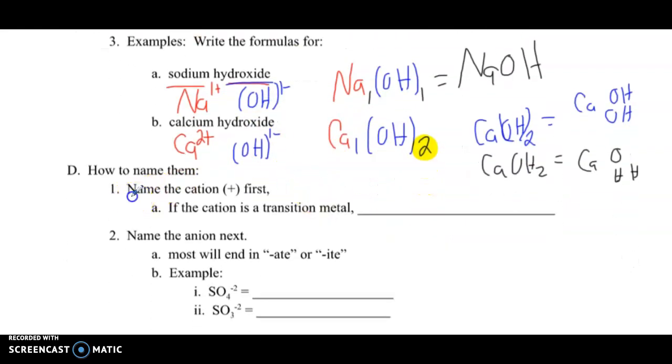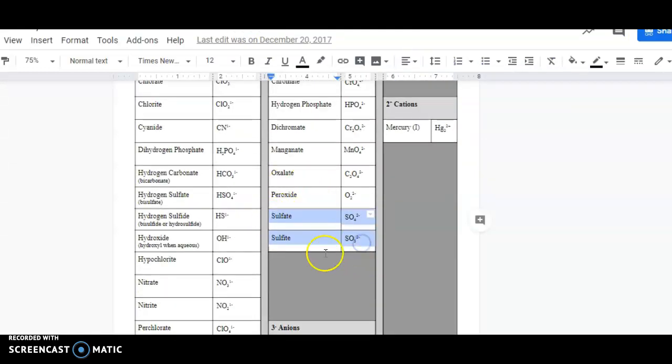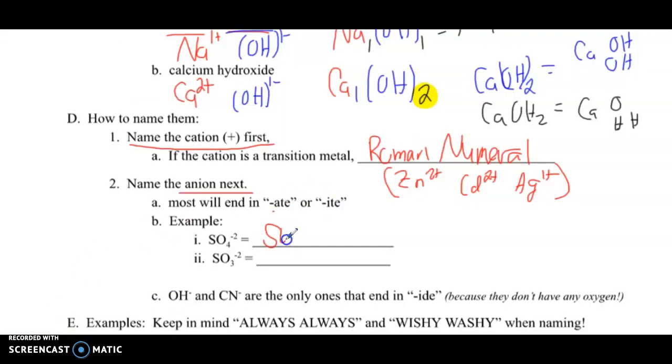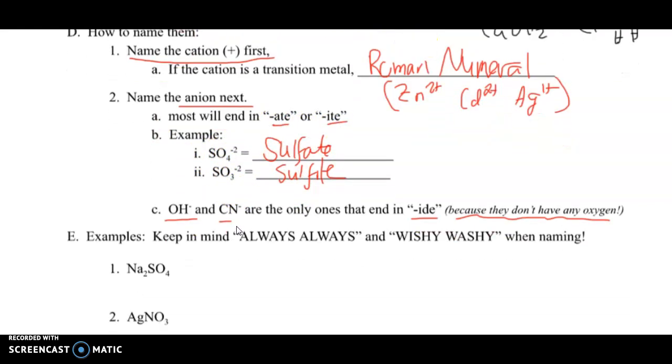Let's review the rules. First step is always name the cation first. If it's a transition metal, you need a Roman numeral. But there's a couple exceptions—zinc is always a 2+, cadmium is also always a 2+, and silver is always a 1+, and they don't need Roman numerals. Next, you're going to name the anion. Most of these end with -ate or -ite. So SO4 2- and SO3 2- are named sulfate and sulfite. OH minus hydroxide and CN minus cyanide are the only ones that end in -ide. The -ide ending means that there's no oxygen. -ate will have one more oxygen than the -ite.